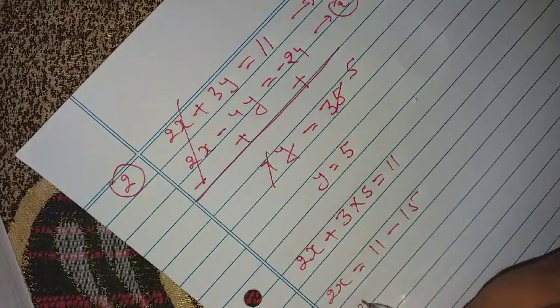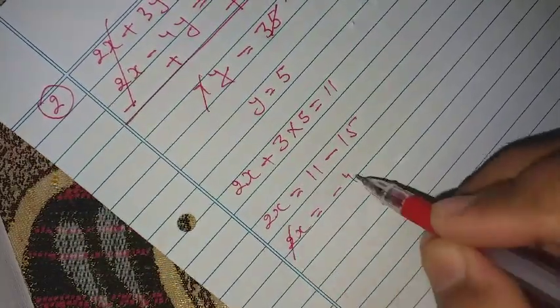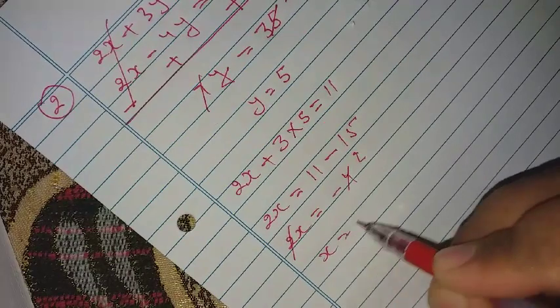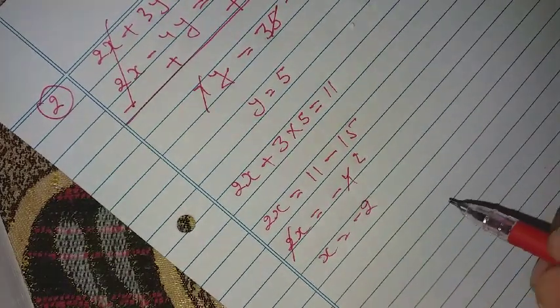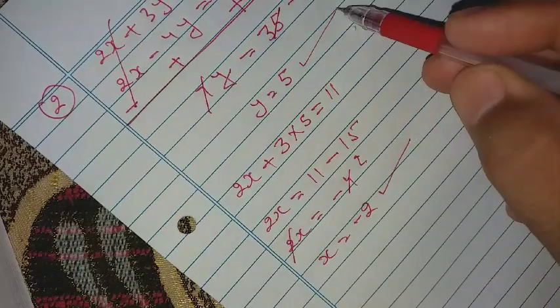So here 2x equal to minus 4. So x equal to minus 2. Okay so it is the value of x minus 2 and y is 5.